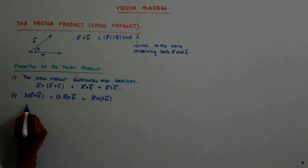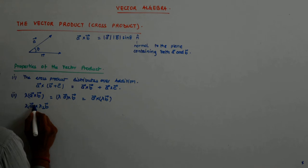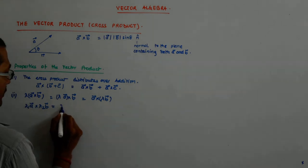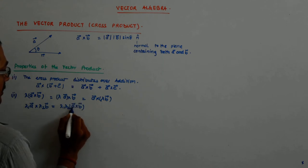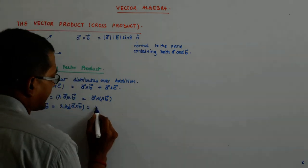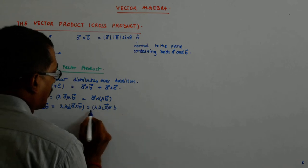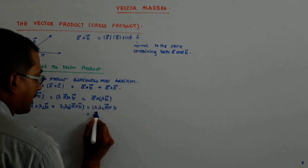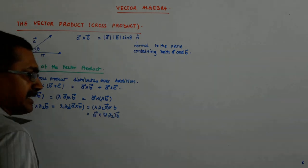Furthermore, if there are two scalars — for example, (lambda1 a) cross (lambda2 b) — that gives us lambda1 lambda2 (a cross b). You can also write it as a cross (lambda1 lambda2 b). You can shuffle the scalars any way you want.